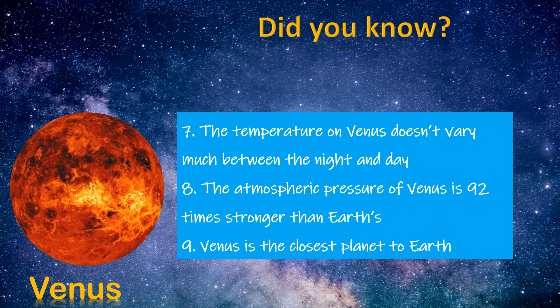The temperature on Venus doesn't vary much between night and day. The atmospheric pressure of Venus is 92 times stronger than Earth's. Venus is the closest planet to Earth.